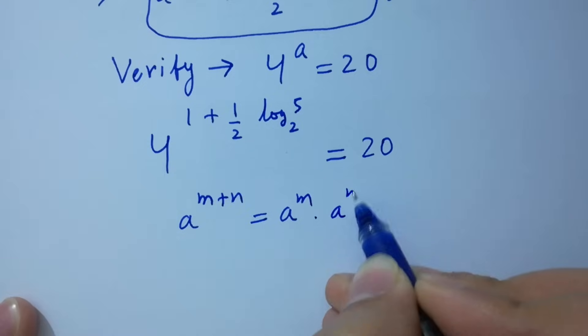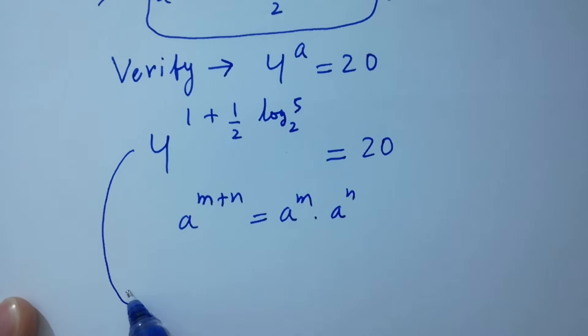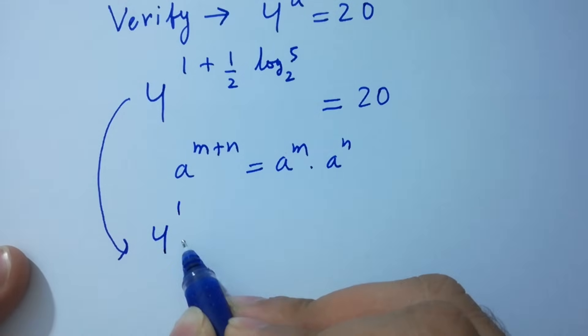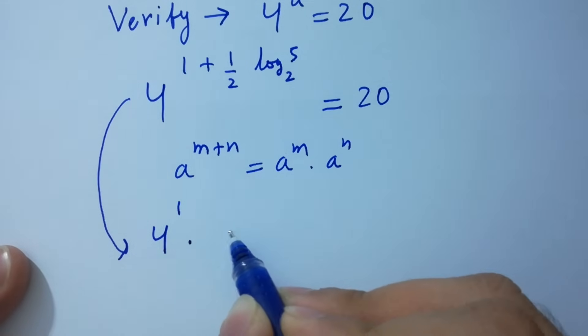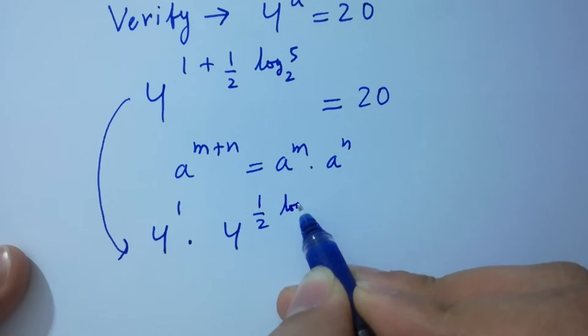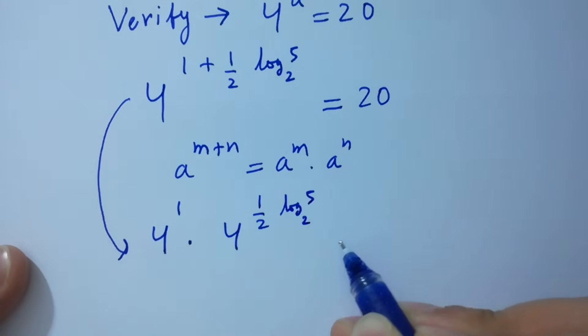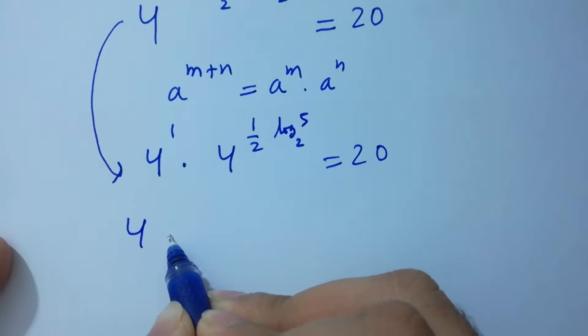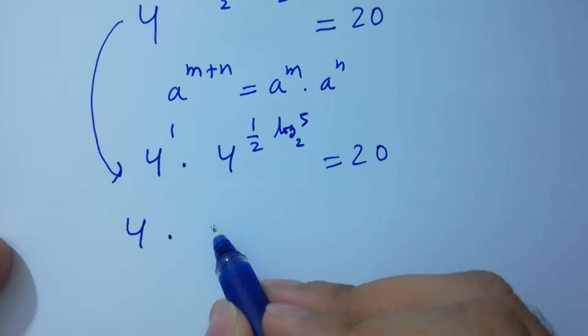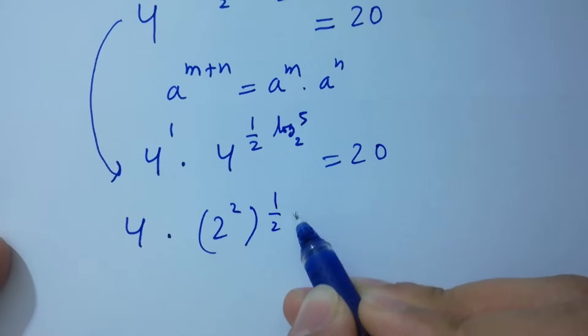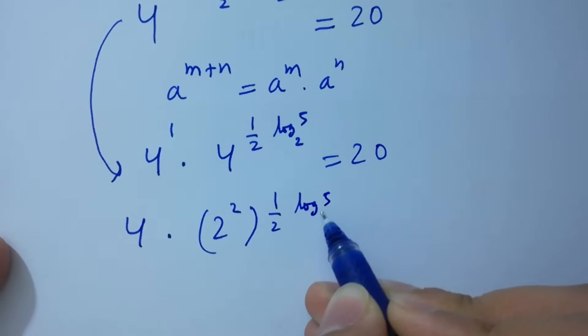A to the power m plus n equals a to the power m times a to the power n. We get 4 to the power 1 times 4 to the power 1 over 2 log 5 to the base 2 equals 20. 4 to the power 1 is 4 times 4, which is the same as 2 square to the power 1 over 2 log 5 to the base 2.